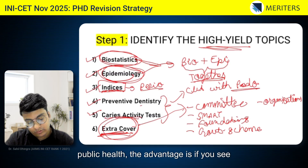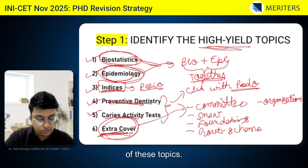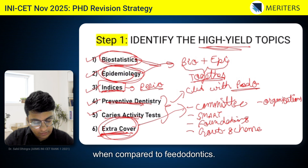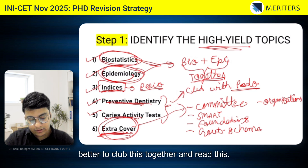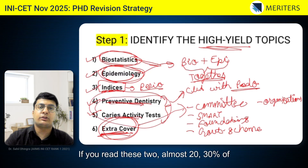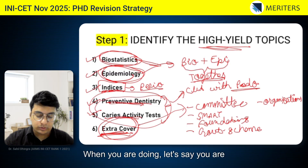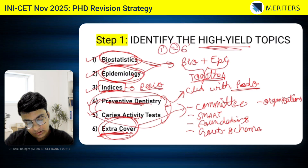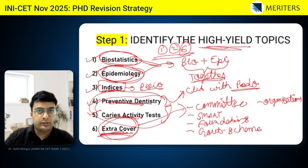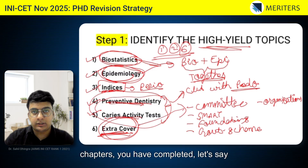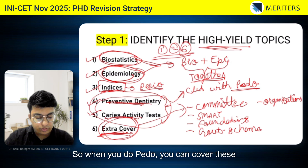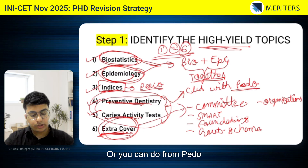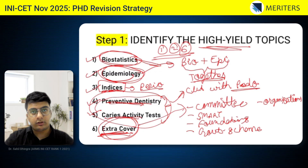Public health has a very extensive coverage — for example, caries activity tests are covered in much more depth in the public health textbook or MCQ bank than in pedodontics. So it is better to club them and read together. If you read these two together, almost 20 to 30% of pedo is also covered. When you start public health, complete chapters one, two, and six first, then do the remaining when you approach pedo.